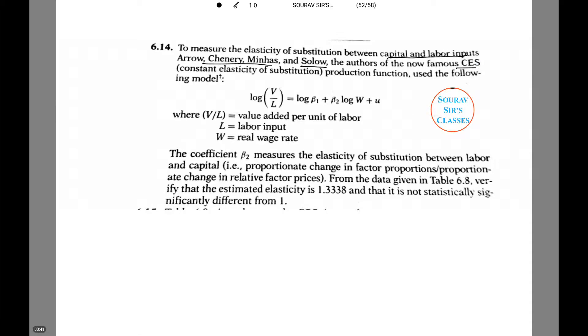Log V by L equals log beta1 plus beta2 log W plus U. The coefficient beta2 measures the elasticity of substitution between labor and capital. That is proportional change in factor proportions or proportional change in relative factor prices.